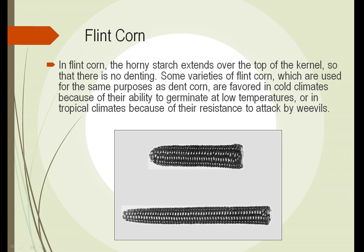In another type of corn called flint corn, the hard or horny starch from the sides extends all the way over the top of the kernel. So even though the inside will shrink a little as it dries out, there will be no denting in the top. Flint corn has the ability to germinate at a lower temperature than dent corn, so in cold climates, flint corn becomes the preferred corn. It also becomes preferred in tropical climates because it's more resistant to attack by an insect called a weevil. So in colder and hotter areas, flint corn; in temperate areas in the middle, dent corn.